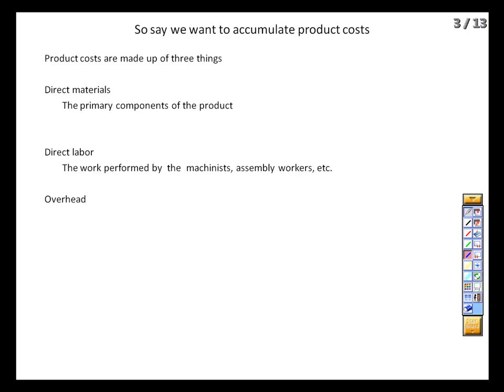What sorts of things are in overhead? Indirect labor: the supervisor and janitorial salaries. If we don't have a project foreman, the work doesn't get done. If we don't have someone sweeping up the metal filings at the end of every day, soon no work can get done. These jobs are critical to production but aren't directly related to specific products. Also utilities and facilities costs — if we don't pay the light bill, the machines won't have electricity to run. If we don't pay the rent, we get evicted and can't produce anything. These costs must be incurred but are not directly traceable to a particular product, so we allocate them among everything we produce.